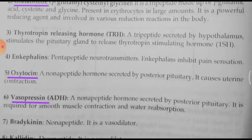Next is vasopressin, which is also called anti-diuretic hormone. It is also a nonapeptide made up of nine amino acids, secreted by the posterior pituitary gland. It is required for smooth muscle contraction and water absorption, and is involved in maintaining the water balance in the body.